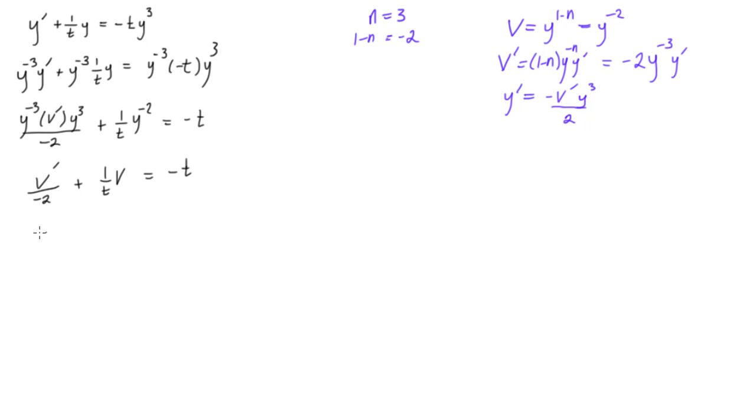Last thing we want to do here is multiply everything by negative 2. v prime, this will be minus 2 over t v, and this is equal to minus 2 times minus t is equal to 2t. And look at this, now what we've done is we've put this equation into the form of a linear first order after we transformed that variable. So now it's a linear first order equation and the variable is v, and we know how to solve this using the integrating factor method.